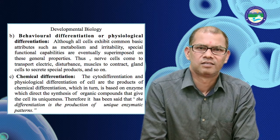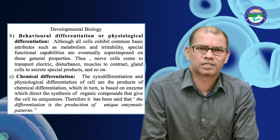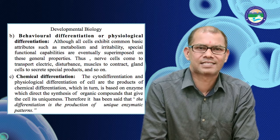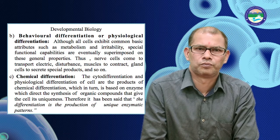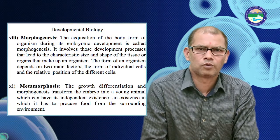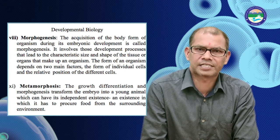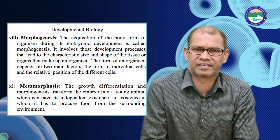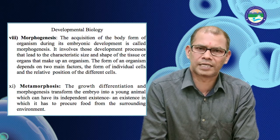Although all cells exhibit common basic attributes such as metabolism, specific functional capabilities are eventually superimposed on these general properties. Nerve cells come to transport electrical impulses, muscle cells to contract, glands to secrete specific products, and so on. Morphogenesis: the sequence of body organization during embryo development leads to the characteristic size and shape of tissues, and depends on two main factors: the form of individual cells and the relative position of the different cells.